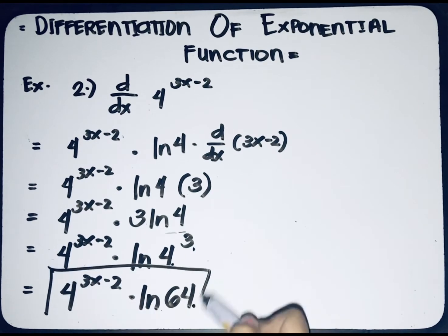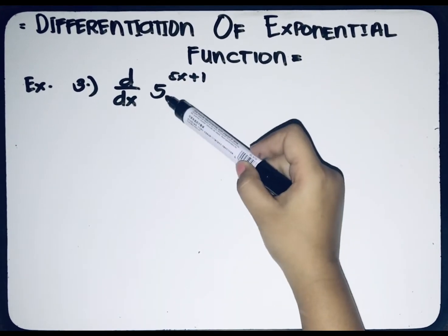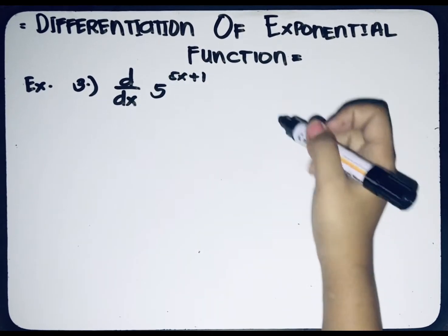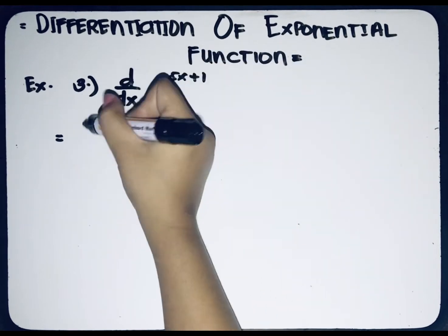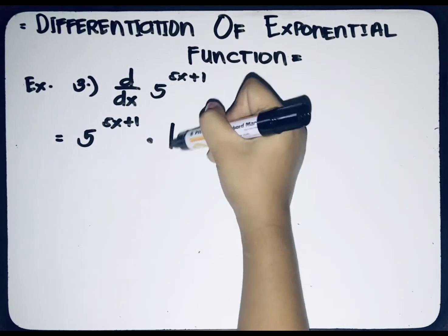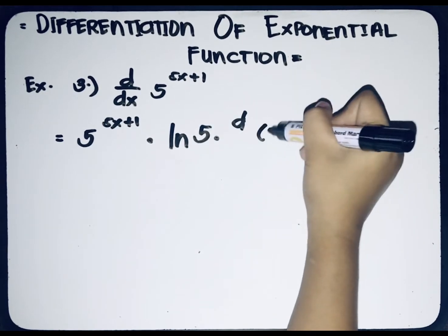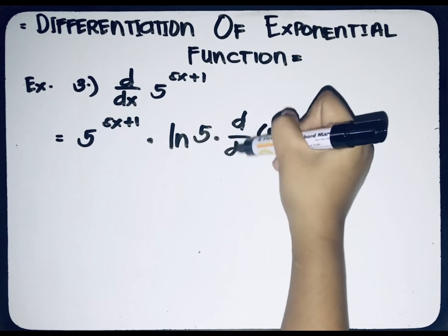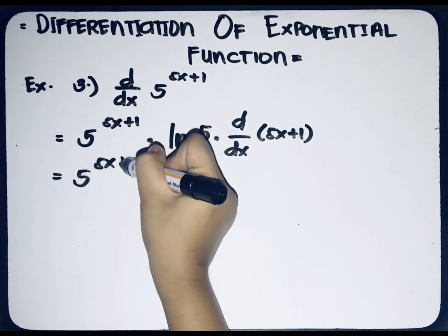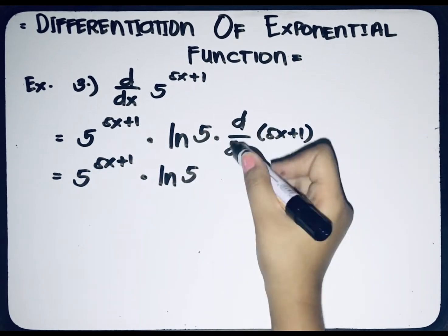So that is our final answer for the second example. For the third example, find the derivative of 5 raised to (5x + 1) with respect to x. Applying the first formula, we get 5 raised to (5x + 1) multiplied by ln(5), then multiplied by the derivative of (5x + 1) with respect to x, which equals 5.